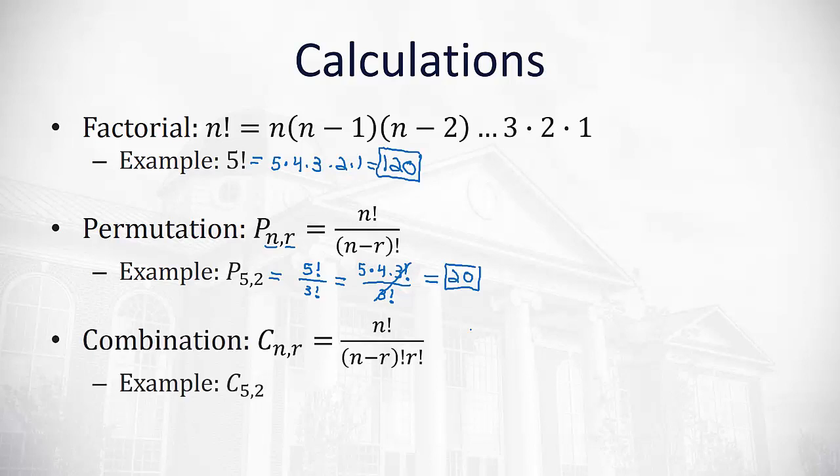The combination formula is really similar. Out of a total of n items, we're going to choose r of them. The only difference is now we're going to also divide by that r factorial in the denominator. So if I'm going to choose 2 out of 5 items, it's still going to be 5 factorial. We'll still divide by their difference 3 factorial. But we're also going to divide by 2 factorial.